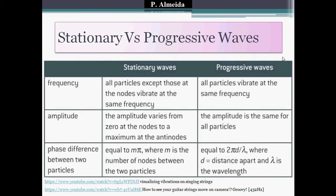For stationary waves: all particles except those at the nodes vibrate at the same frequency. The amplitude varies from zero at the nodes to the maximum at the antinodes. The phase difference between two particles equals m times π, where m is the number of nodes between the two particles.